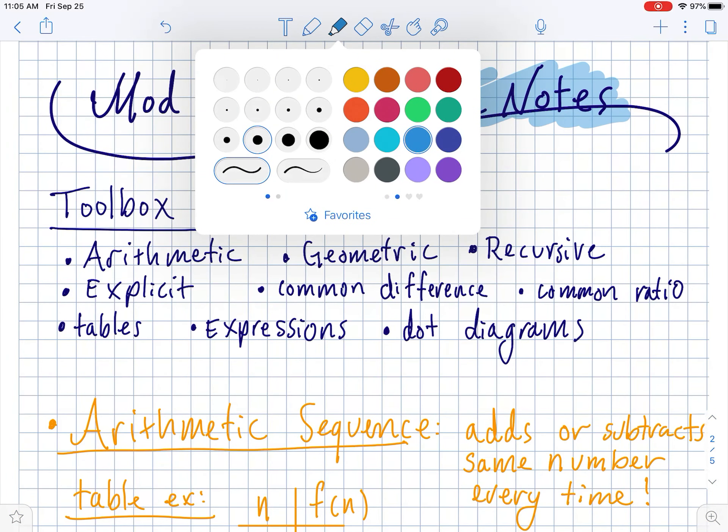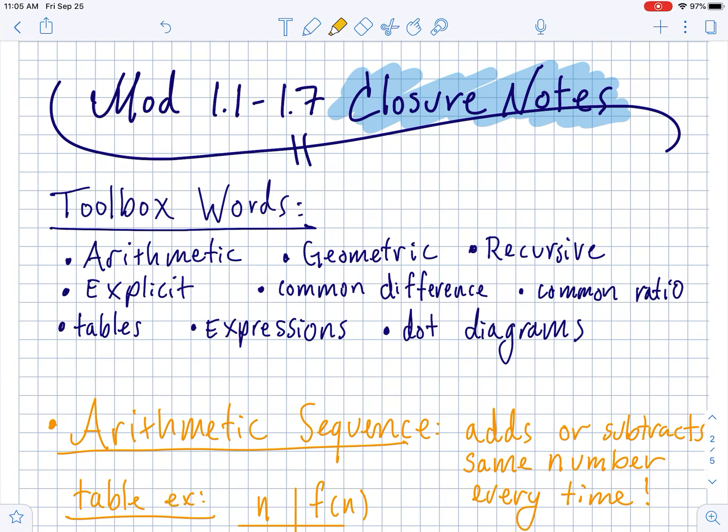So some words that you guys should be familiar with that we're going to be using are arithmetic, geometric, recursive, explicit, common difference, common ratio, and we're going to do all of that stuff with tables, expressions, and maybe even a dot diagram.